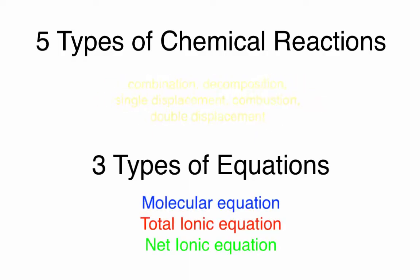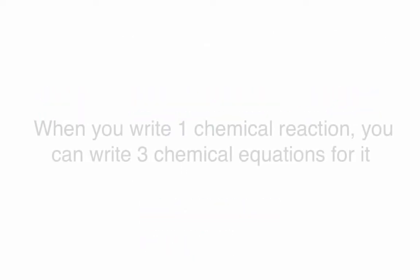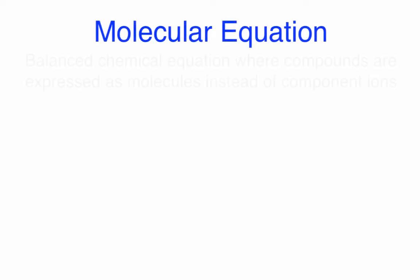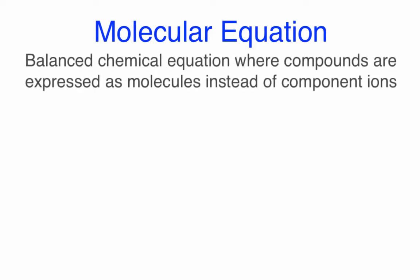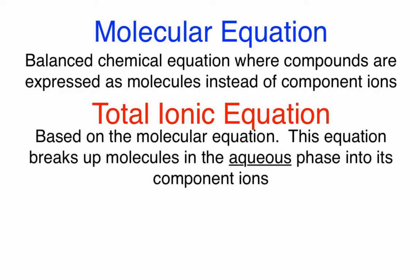In general, a chemical reaction occurs when one or more reactant molecules rearrange themselves to form new product molecules. For each chemical reaction written, you can write three equations based on that particular chemical reaction. When you are given reactants, the first equation you need to write is a molecular equation — a balanced chemical equation where the compounds are expressed as molecules instead of component ions. The next equation is the total ionic equation, which breaks up all the molecules in the aqueous phase into their component ions.